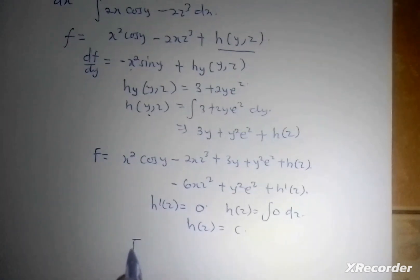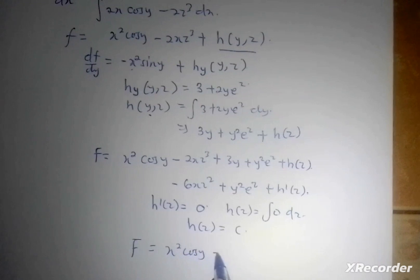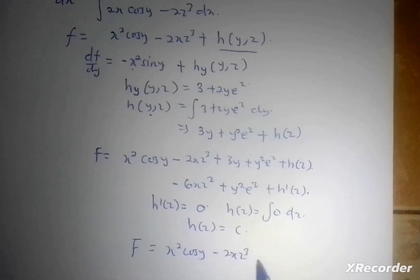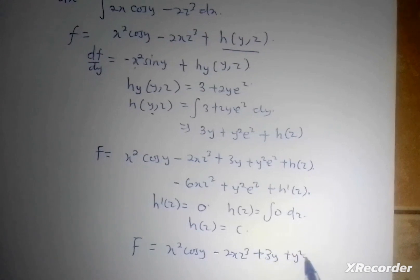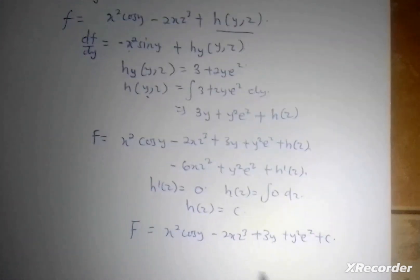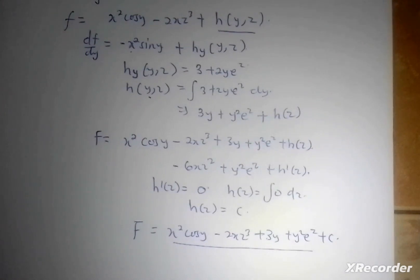Hence, my potential function f is equal to x squared cos(y) minus 2xz cubed plus 3y plus y squared·e^z plus c. Thanks for watching this video — don't forget to like, subscribe, and share. See you in another tutorial.